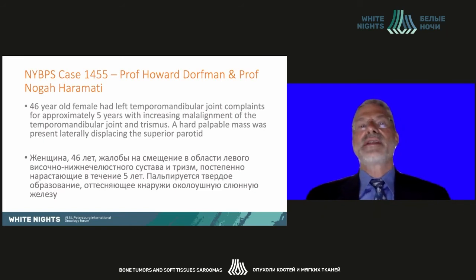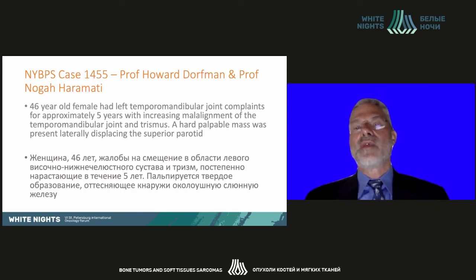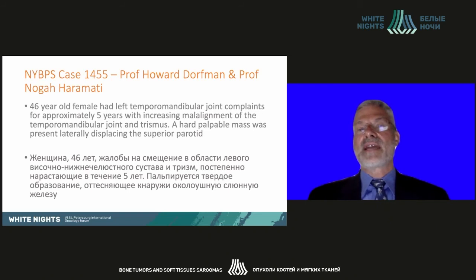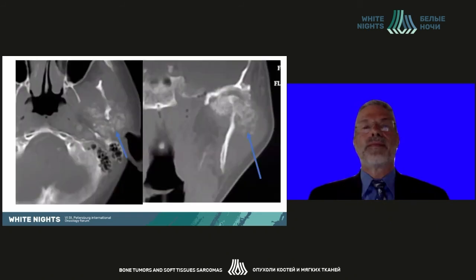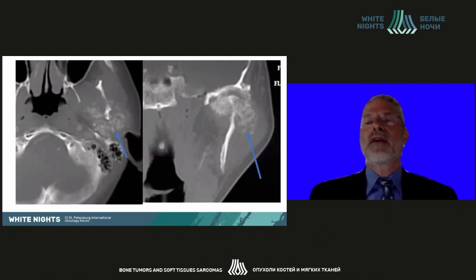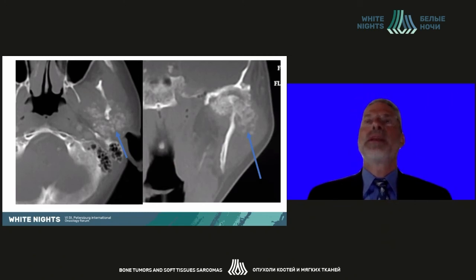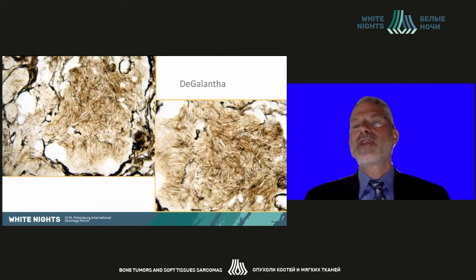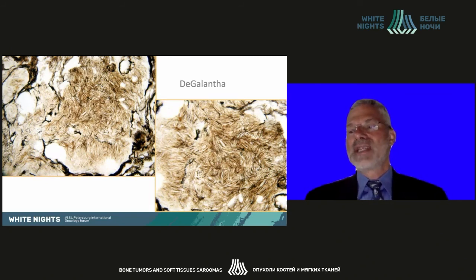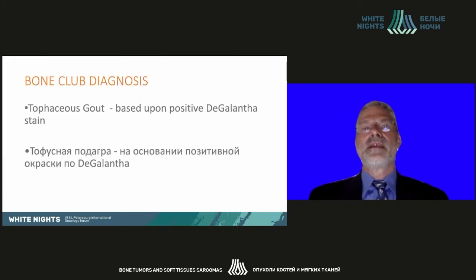The patient is a 46-year-old female with left temporomandibular joint complaints for approximately five years, with increasing malalignment of the temporomandibular joint and trismus. A hard, palpable mass is present laterally displacing the superior parotid. We see fluffy, amorphous calcifications in the region of the temporomandibular joint. Radiographically, pyrophosphate arthropathy would be considered more common than gout in the temporomandibular joint. But on pathology with degalanthistane staining, we can see the shadows of the negatively birefringent needles of a gout attack. This is tofaceous gout, based upon a positive degalanthistane stain.